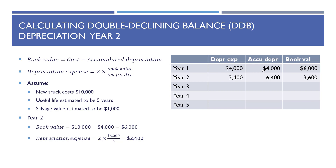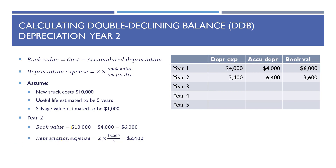In year two, the book value is $10,000 minus $4,000, or $6,000. Depreciation expense is therefore two times $6,000 divided by five, or $2,400. So in year two, depreciation expense is $2,400. Accumulated depreciation is then $6,400 — that's $4,000 from last year plus $2,400 from this year — and book value is $3,600.